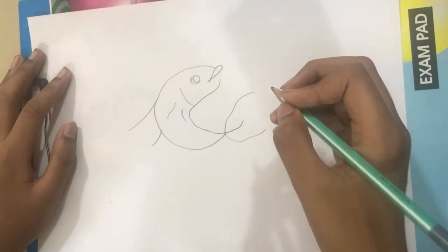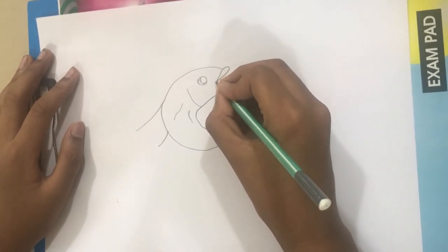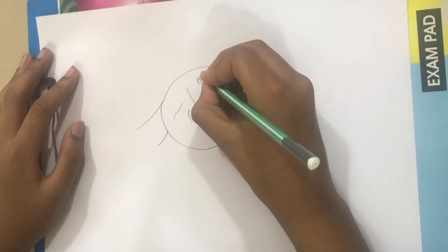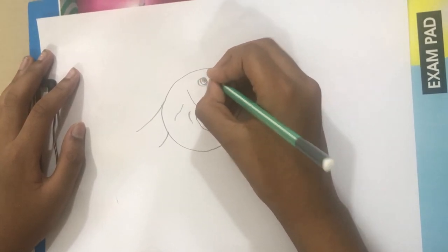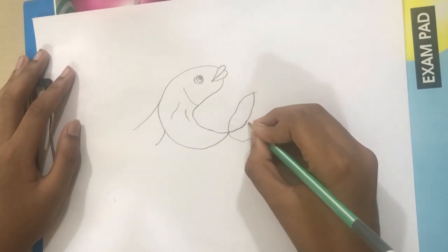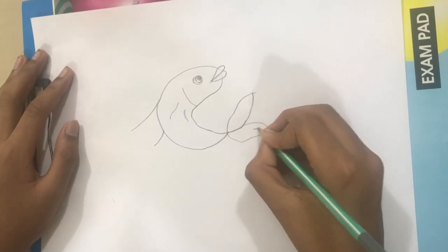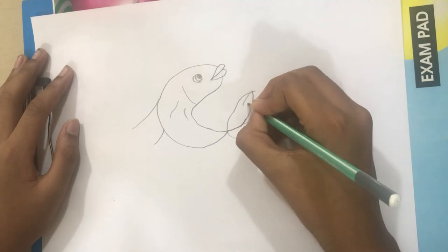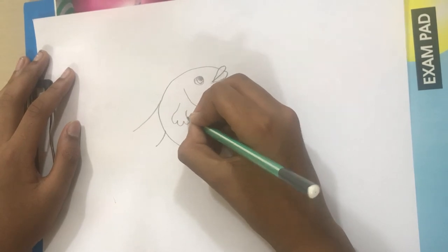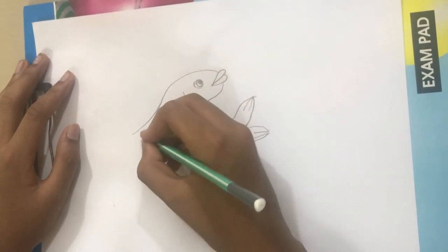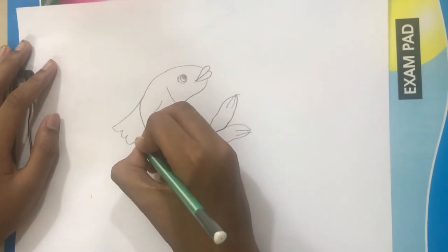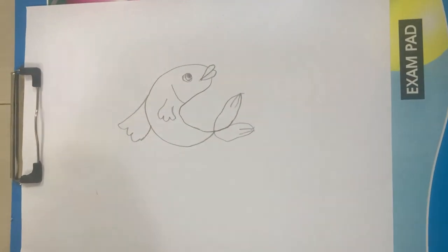The fifth step and the last step is to draw, complete drawing the fish. That is how you draw a fish from the small letter C.